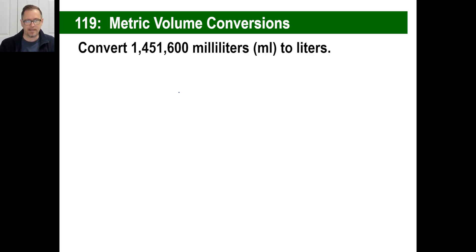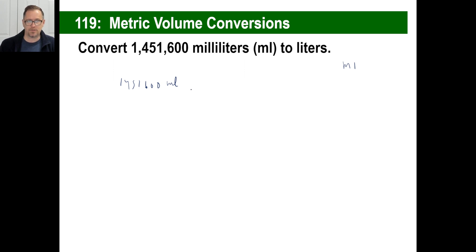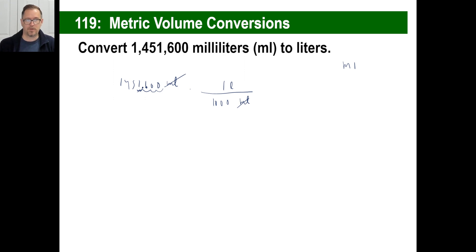Let's do a couple of these. Convert 14,500 — wait, 1,600 milliliters to liters. The method's the same. You put milliliters on the bottom of your conversion fraction. We know there are 1,000 milliliters in one liter, so we divide by 1,000 — move the decimal three places. So 1,451.6 liters is the conversion. Piece of cake, straightforward.